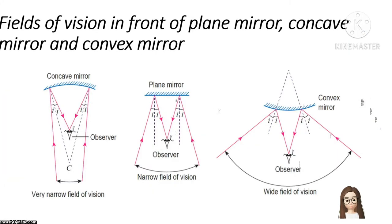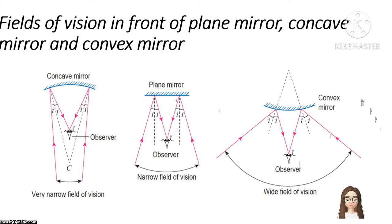The field of vision in front of a plane mirror, concave mirror, and convex mirror differs. As you can see from the diagram, the concave mirror has a very narrow field of vision, followed by the plane mirror, while the convex mirror has the widest field of vision.